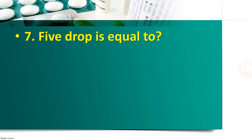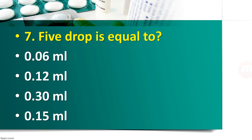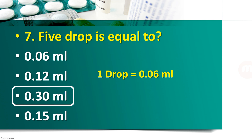Question number 7: 5 drops is equal to how much ml? — 0.06 ml, 0.12 ml, 0.30 ml, or 0.15 ml? The right answer is 0.30 ml. 1 drop is equal to 0.06 ml. You have to multiply 0.06 into 5, and you will get the answer 0.30 ml.